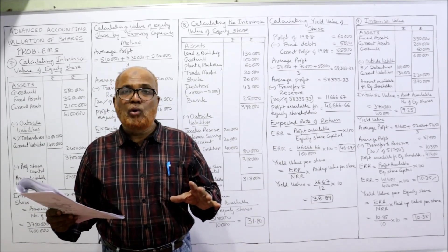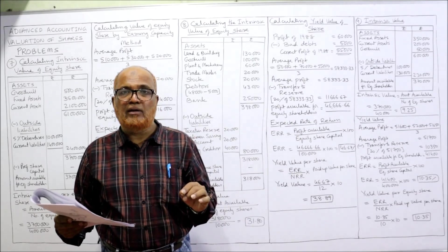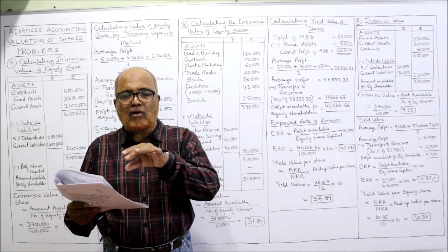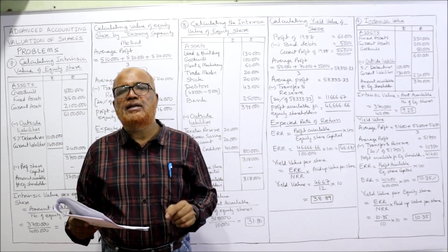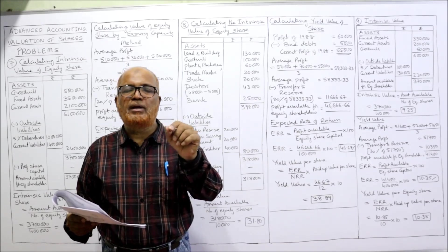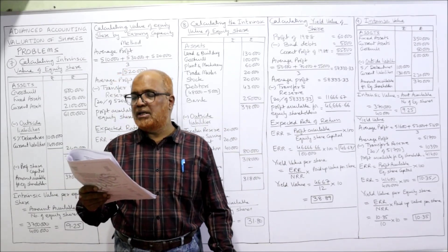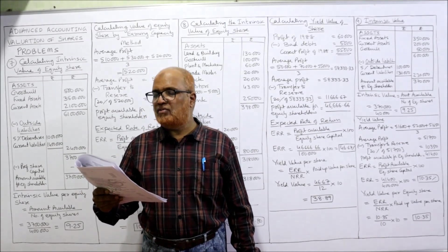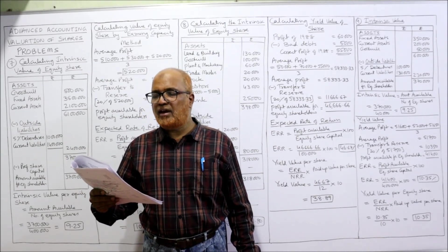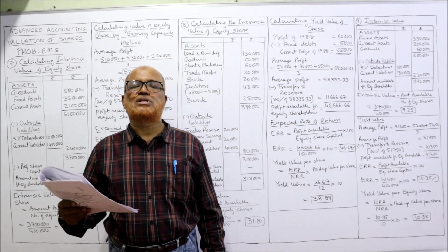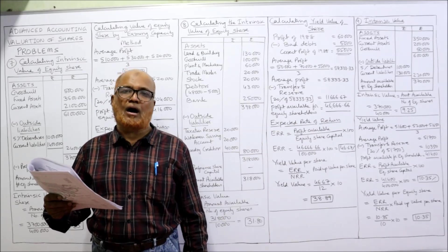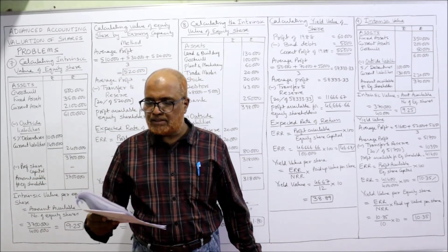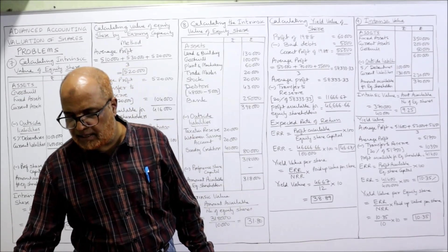Don't make it a rule that every company transfers 20% only — in real practice it may depend on the company, but for our problem it is given. A fair investment return may be taken at 10% — that is NRR 10%. Compute the value of company shares by net assets method and the yield basis.